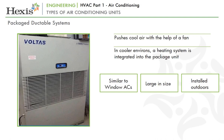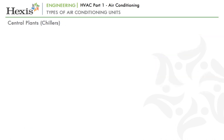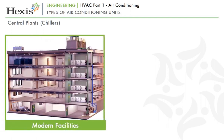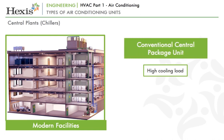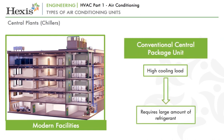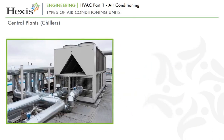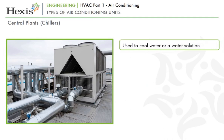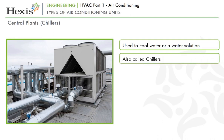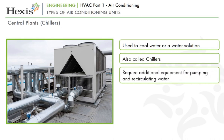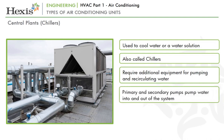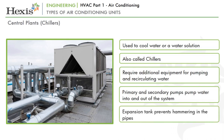Packaged ductable systems will be covered in greater detail in HVAC Part 4. In modern facilities where the cooling load is very high, central plants are used to cool water or a water solution, which is then circulated through pipes and heat exchangers — typically AHUs — to cool the air. These types of central systems are also called chillers. They require additional equipment for pumping and recirculating the water, including primary and secondary pumps, and an expansion tank to prevent hammering in the pipes. Chillers will be covered in greater detail in HVAC Part 2.